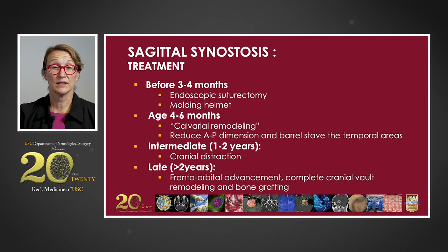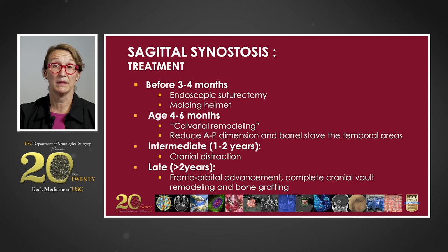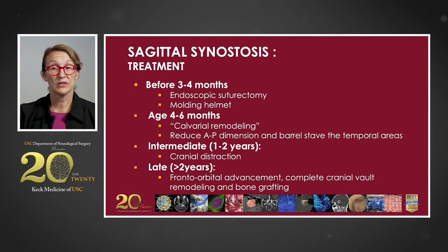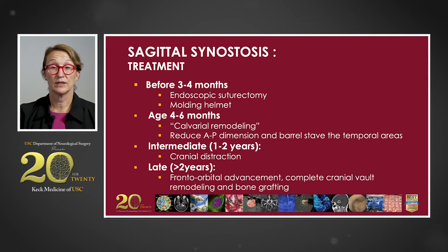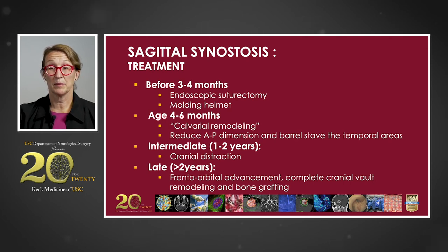The treatment for sagittal synostosis varies by the time of diagnosis. If a child is diagnosed early, typically before three to four months of age, they're a candidate for an endoscopic suturectomy followed by molding helmet therapy. At four to six months, children typically undergo an open calvarial remodeling to reduce the AP dimension of the skull with barrel stave of the temporal areas, allowing for bitemporal widening. At late diagnosis of approximately one to two years, these children can be candidates for cranial distraction. Very late diagnosis after two years of age requires a much more complex calvarial vault remodeling with frontal orbital advancements and bone grafting.